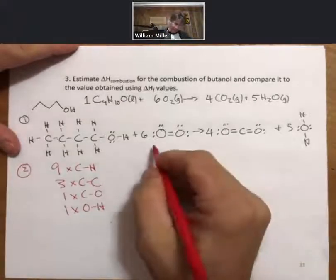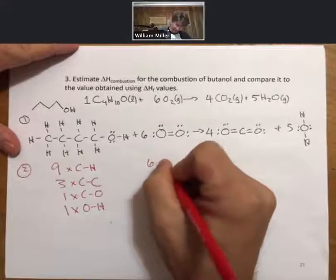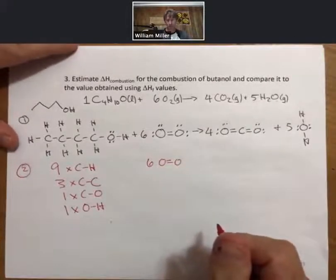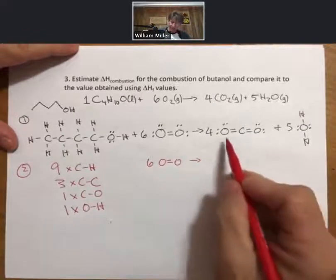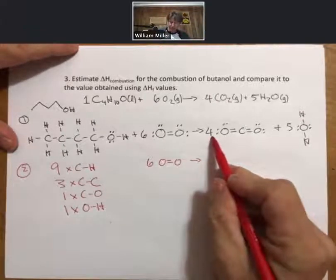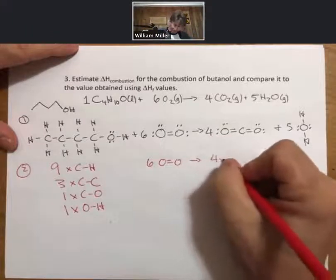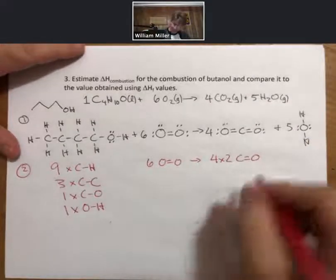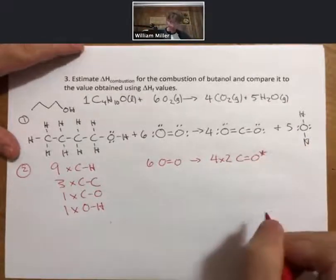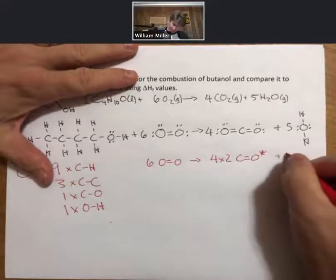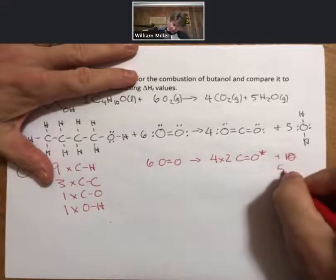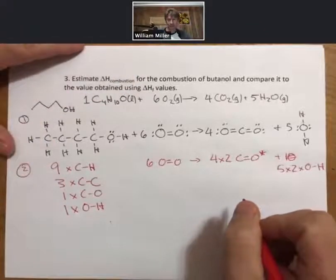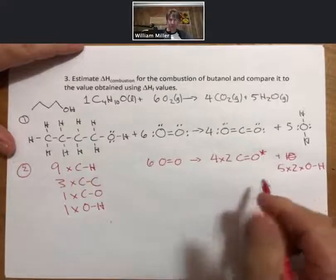I have one carbon-oxygen and one oxygen-hydrogen. And then I also have six double bonds between two oxygen atoms. Over on the other side, I actually have four times two C double bond O. I'm going to put a little asterisk here. And then I actually have five times two times oxygen-hydrogen single bond. So those are all the bonds.